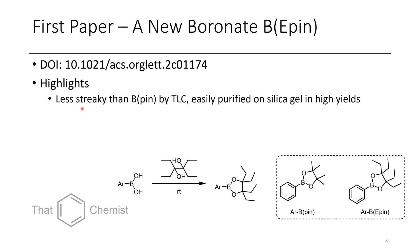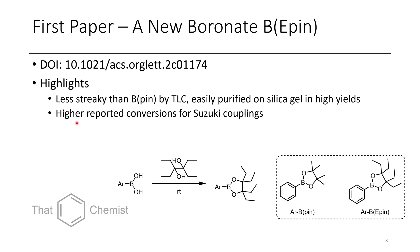Some highlights include that B-pin groups are typically fairly streaky by TLC, but their B-E-pin groups are actually less streaky and slightly less polar. So they run easier on TLC and show less decomposition, which is a common issue with B-pin esters. In the next slide, you can see some examples of TLCs where this is massively improved.